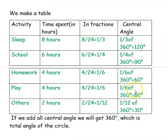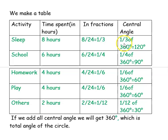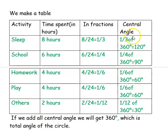Now we have found all the central angles. We will make a table so that it will be easy for us to draw the pie chart. The table has columns: activity, time spent in hours, fraction, and central angle — using the formula fraction multiplied by 360 degrees. The activities are sleep, school, homework, play, and others. If you add all these central angles, you will get 360 degrees — that is the total angle of the circle.